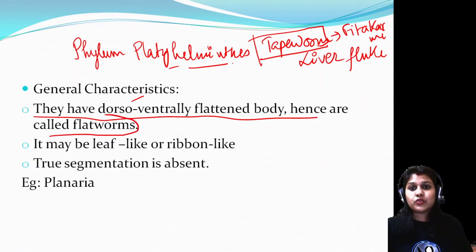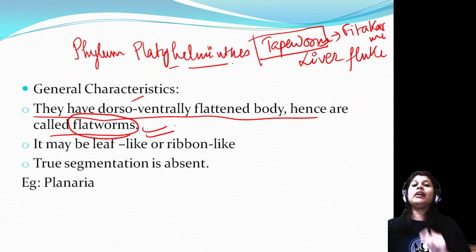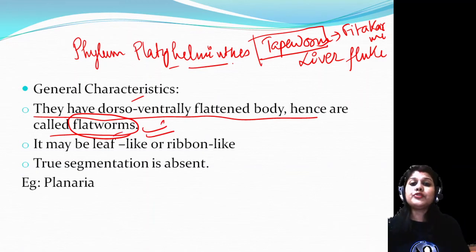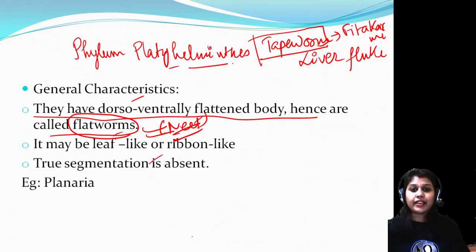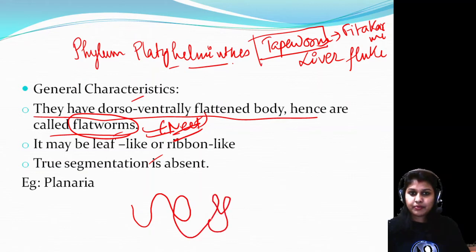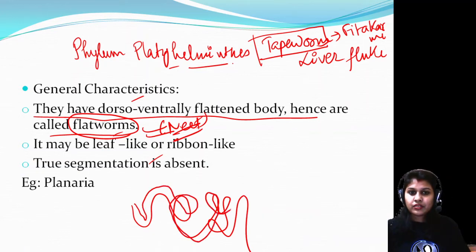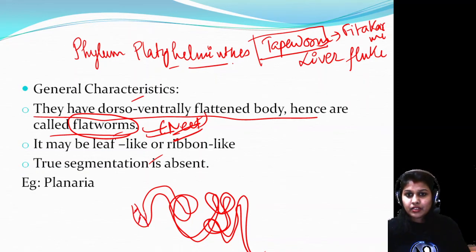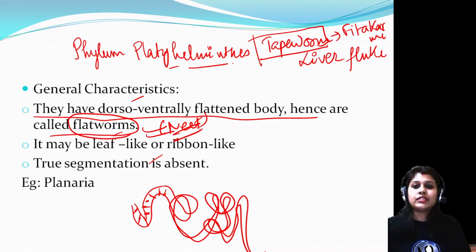Also, if someone eats meat from an infected animal without proper washing or cooking, tapeworm can be ingested and cause damage in the body. These animals have a dorsal-ventrally flattened body and hence are called flatworms. This is the important terminology for Platyhelminthes - they are known as flatworms. Let me show you a simple diagram of tapeworm.